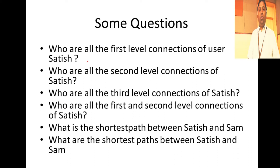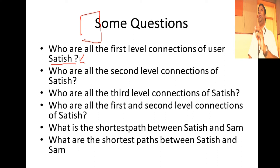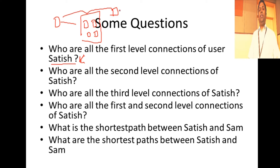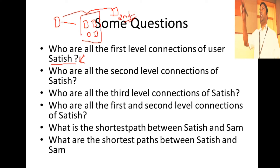First, we want to know who are all the first level connections of a user. When you log into your social media app, you always see the list of connections you have. I'll use the terminology with respect to LinkedIn. You can bring out all the first level connections for a user using this particular strategy. The second query is: what are all the second level connections of Satish? This is made visible in your app — say you post something and somebody likes the post, it shows 'second,' meaning they are a second level connection.